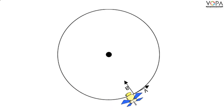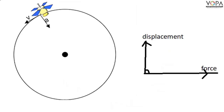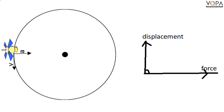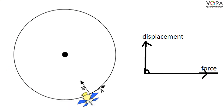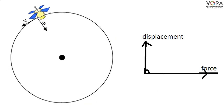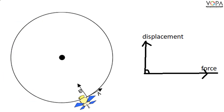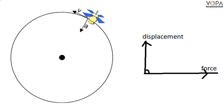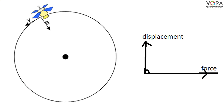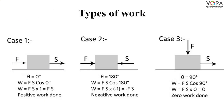An artificial satellite revolves around the Earth in a circular orbit. In this case also, the direction of gravitational force is perpendicular to the displacement of the artificial satellite. So the work done is zero. Here theta is 90 degrees. In this way we have seen the three types of work: positive work, negative work, and zero work.